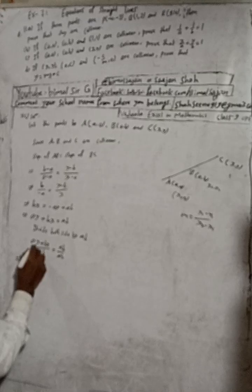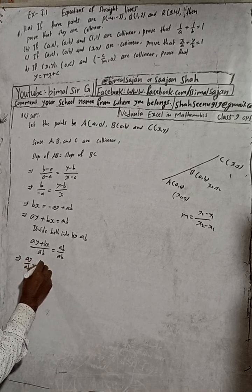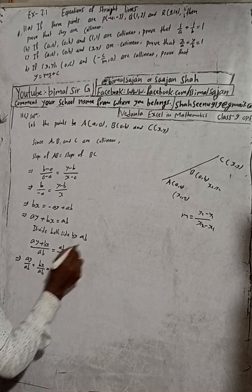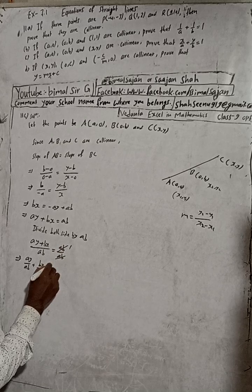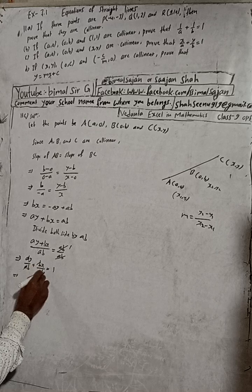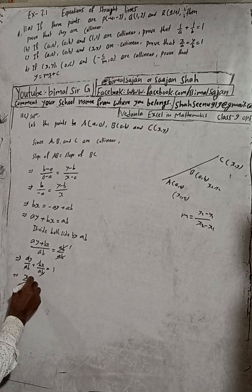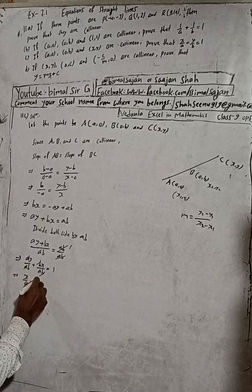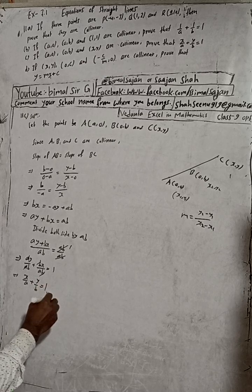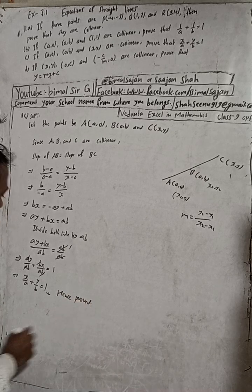Dividing through by ab: ay/ab + bx/ab = ab/ab. The a's cancel and the b's cancel, giving x/a + y/b = 1. Hence proved.